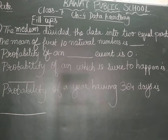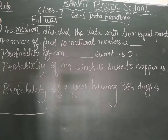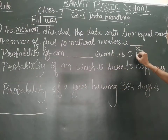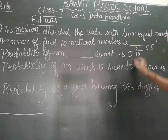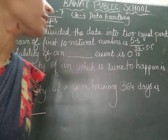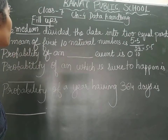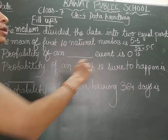The mean of the first 10 natural numbers is? The first 10 natural numbers are 1, 2, 3, 4, 5, 6, 7, 8, 9, 10. If you add them all, you get 55, and we divide by 10 because there are 10 natural numbers. So the answer will be 5.5. The mean of the first 10 natural numbers is 5.5.